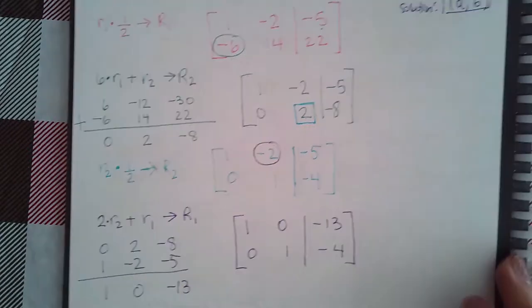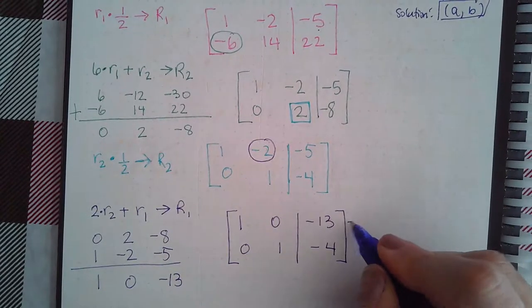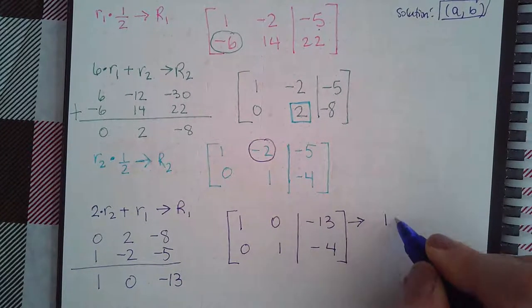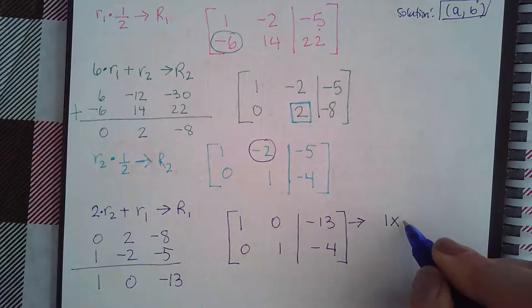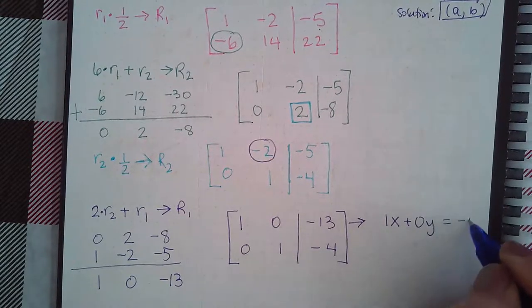And now we can go back into the equation form. So, equation 1 becomes 1x plus no y's equals negative 13.